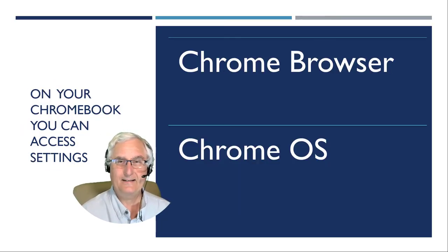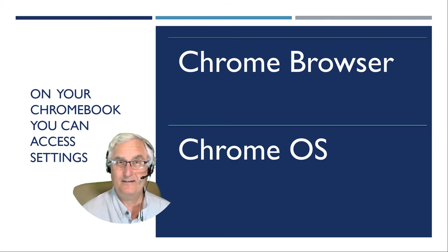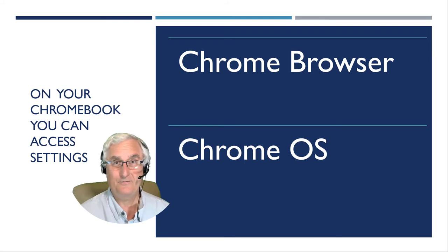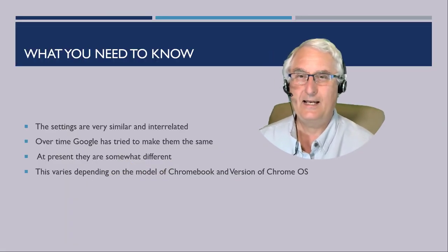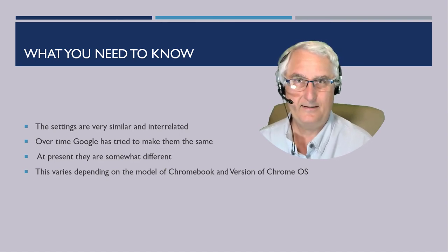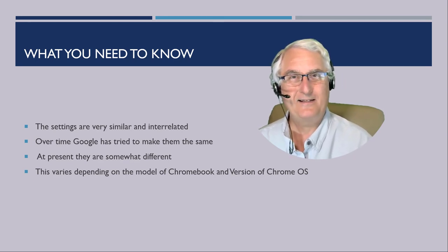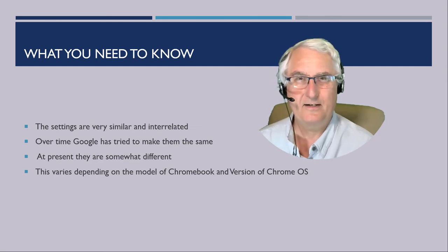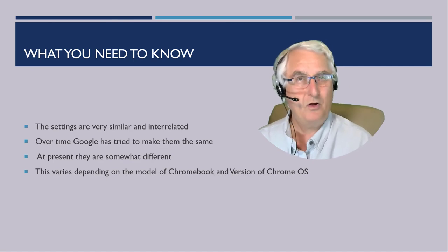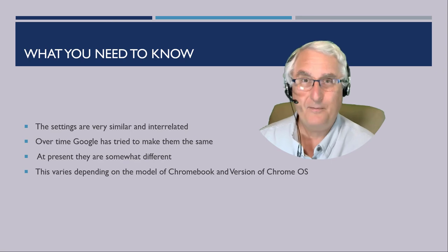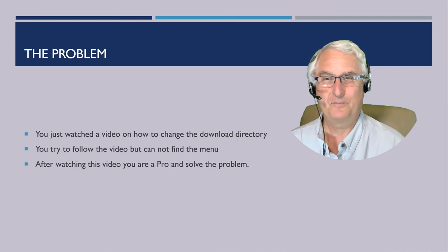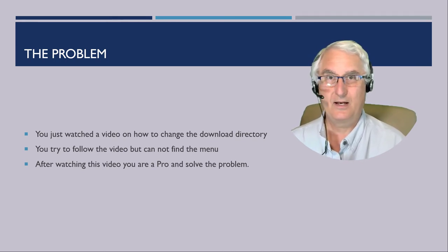So on your Chromebook you can access Settings through your Chrome browser, or you can access Settings through the Chrome OS — two places on your Chromebook where you can find Settings. Now, are they the same or different, and why would you use one versus another? The settings are very similar and interrelated. Over time Google has tried to make them the same, but at present they're somewhat different. This also varies depending on what model of Chromebook you have and what version of Chrome OS you're using.